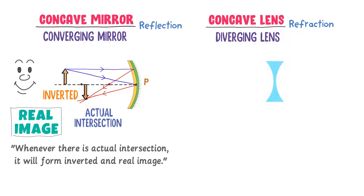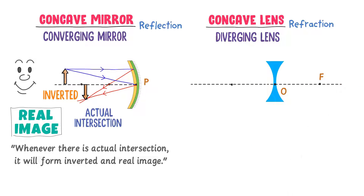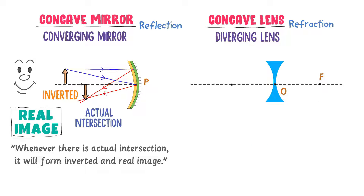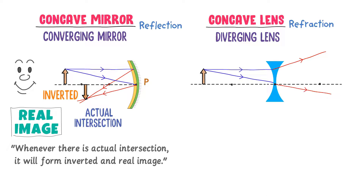Now consider a concave lens. This is a focal point, optical center, and principal axis of the concave lens. Let me place an object here. A light ray parallel to the principal axis hits the surface of the lens. As we know that refraction occurs in lenses, so this ray of light is refracted from the focal point. Secondly, another light ray is coming and hits the lens at the optical center. This ray passes straight through the center of the lens and is not deflected.